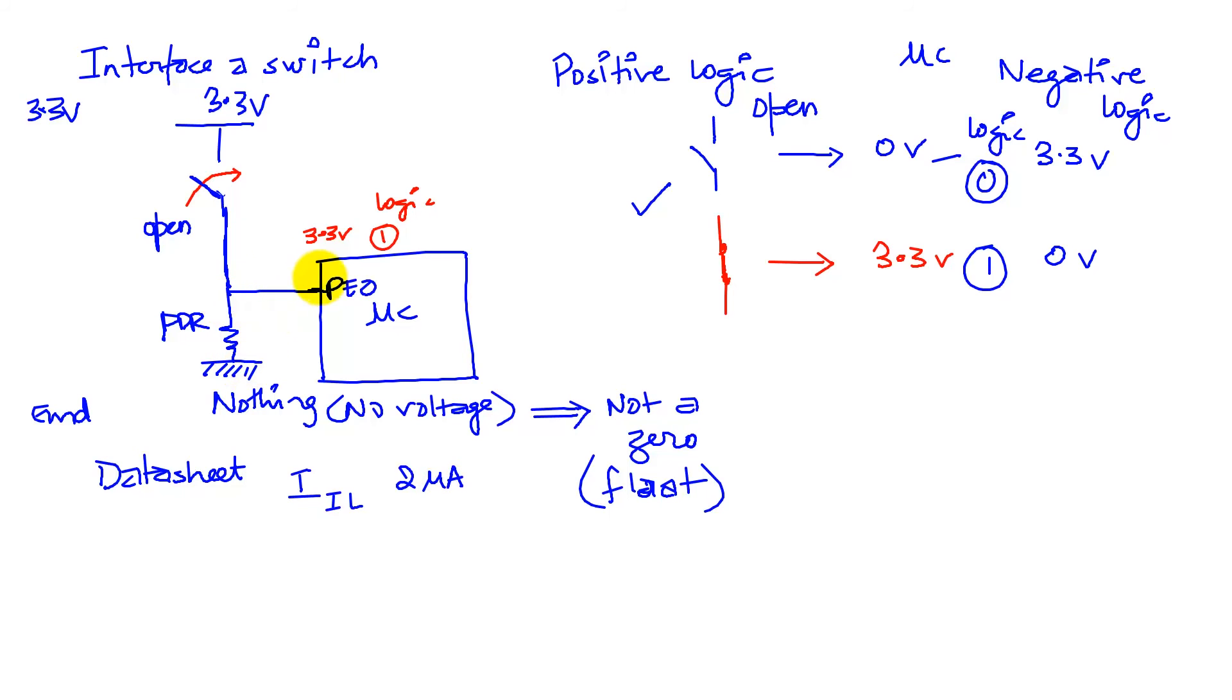What that is telling us is when I have a low, the current being delivered by the microcontroller out is 2 microamps, which tells us that this has to be some value in keeping with that. So I am going to use a resistance here of 10k ohms and see what happens.